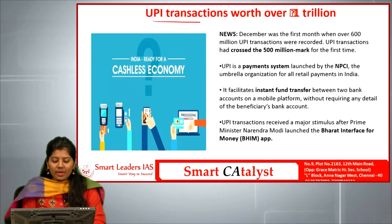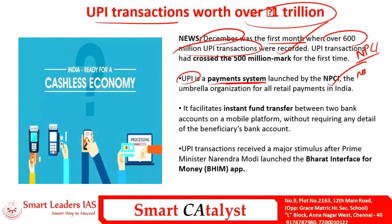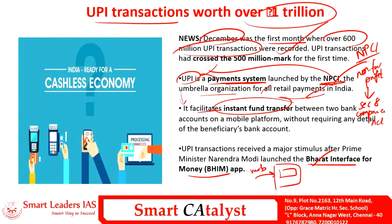The seventh article is UPI transactions worth over 1 trillion. December was the first month when nearly 600 million UPI transactions were recorded, showing that India is moving towards a cashless economy. UPI (Unified Payment Interface) is a payment system launched by NPCI — the National Payments Corporation of India — a not-for-profit company registered under Section 8 of the Companies Act. UPI facilitates instant fund transfer between two bank accounts. The BHIM app (Bharat Interface for Money) links your mobile number to your bank account, enabling instant fund transfer on a mobile platform without requiring beneficiary bank details.